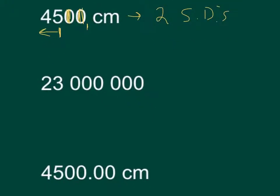Now let's look at 23 million. Again, no decimal place, so we start on the right-hand side and keep moving left until we hit the first non-zero digit. We cross off the zeros — they're just placeholders. Once we hit the first non-zero digit, that and everything to the left is significant, so this also has two sig digs.